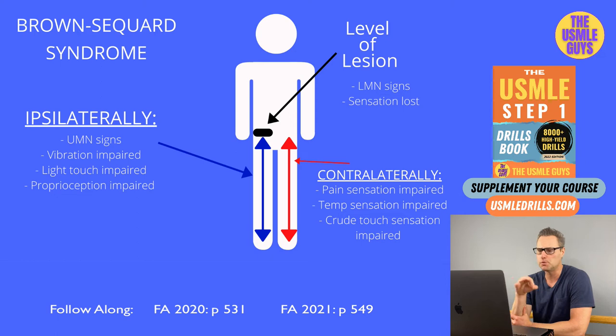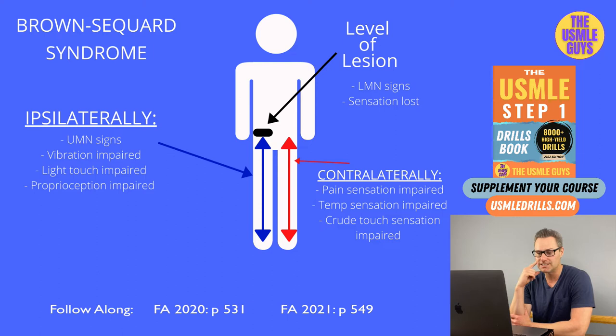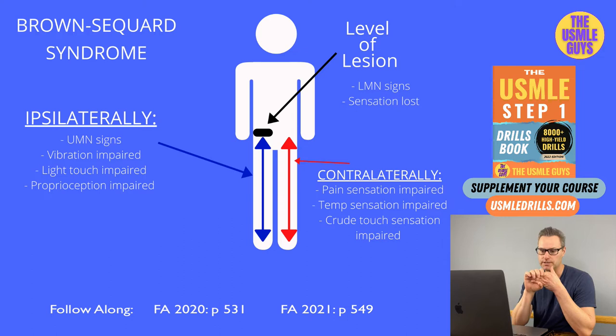We're imagining a theoretical perfectly symmetric one-sided hemisection of the spinal cord. In this condition, you're going to get number one: an ipsilateral loss of sensation at the level of the lesion, as well as lower motor neuron signs at the level of the lesion — findings like weakness, atrophy, fasciculations, and flaccid paralysis.